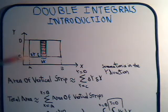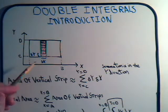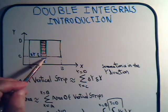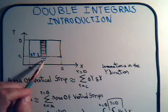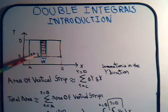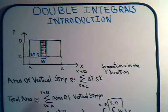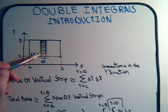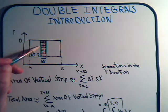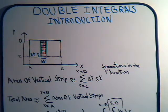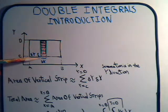We want to find the area of this figure. We have a shaded region of width delta x and height delta y, so its area is simply delta y times delta x. If we added up all the areas of all these shaded regions going from y equals c to y equals d, that would be the approximate area of one vertical strip.